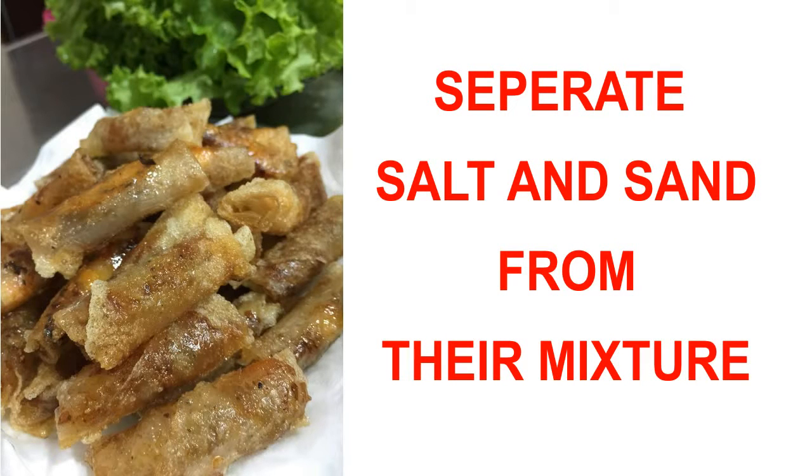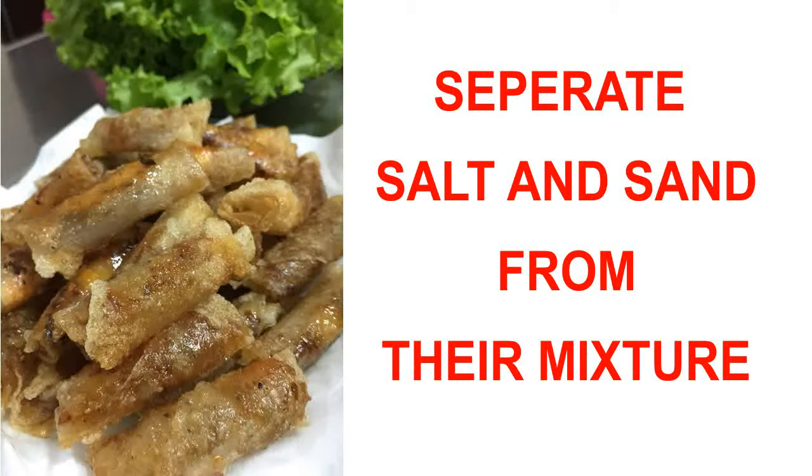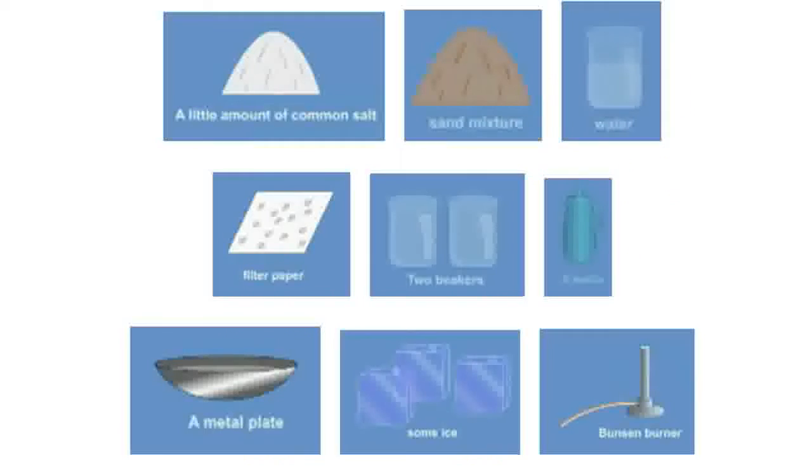To separate common salt and sand from their mixture, things required: a little amount of common salt and sand mixture, water, filter paper, two beakers, a kettle, a metal plate, some ice, and a Bunsen burner.